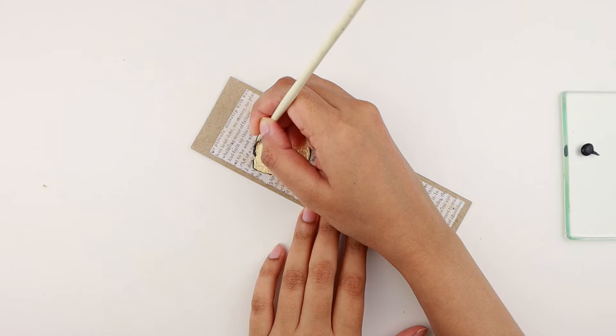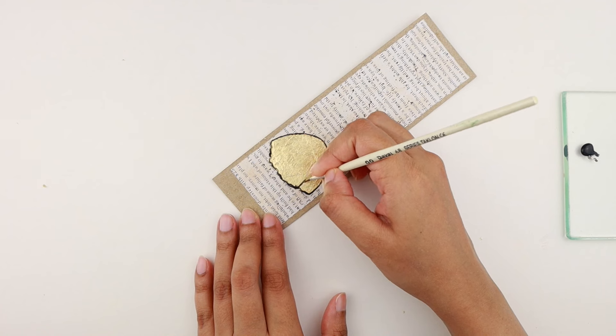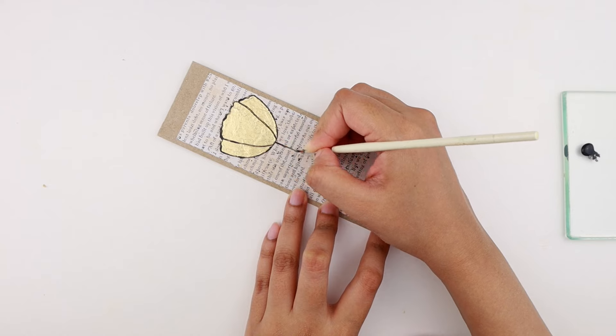Now we're going to take black acrylic paint and outline the edges of the flower. Then I'm defining the petals like so. Finally, we're going to paint the stem.